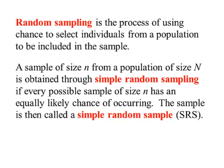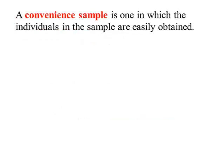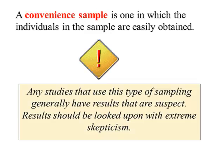A simple random sample will produce samples that are representative of the population. A convenience sample is one that's easily obtained; however, it may not be representative of the population. Any study that uses this type of sampling generally has results that are suspect, and those results should be looked upon with extreme skepticism.